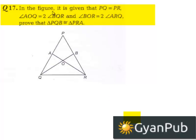Moving on to the 17th question. In the figure, it is given that PQ is equal to PR, angle AOQ is equal to 2 times angle BQR, and angle BOR is equal to 2 times angle ARQ. Prove that triangle PQB is congruent to triangle PRA.